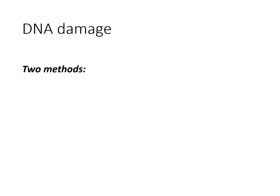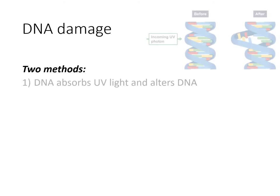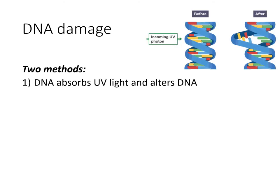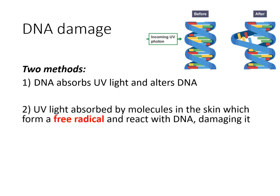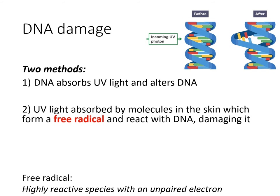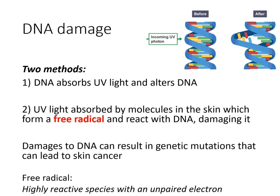How is DNA damaged? There are two methods. First, DNA absorbs UV light and this directly alters the DNA, causing genetic mutations. Second, UV light is absorbed by molecules in the skin which then forms a free radical, and this free radical reacts with DNA and damages it. A free radical is a highly reactive species with an unpaired electron. This unpaired electron makes it very reactive because it wants to either lose or gain an extra electron to become stable. If it reacts with DNA it can cause genetic mutations which can potentially lead to skin cancer.